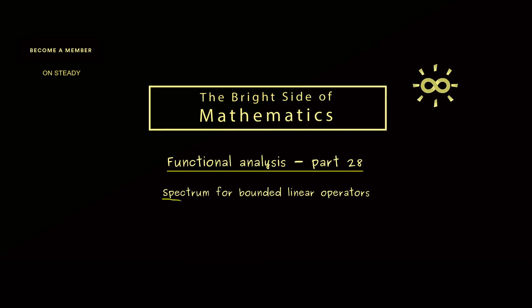This spectrum comes in as a generalization for the eigenvalues of a matrix. For this, please recall when we have a square matrix A, which means we have n rows and n columns, and the entries can come from the complex numbers.